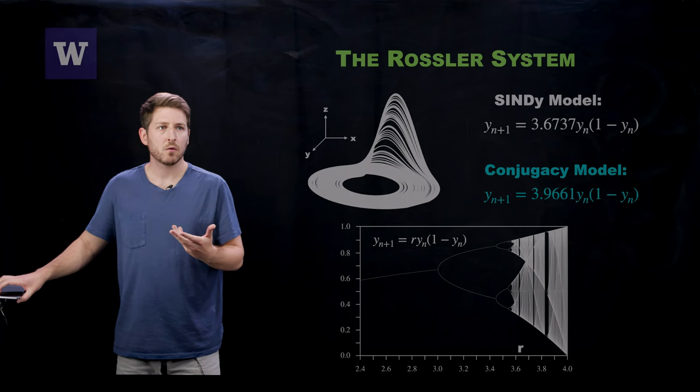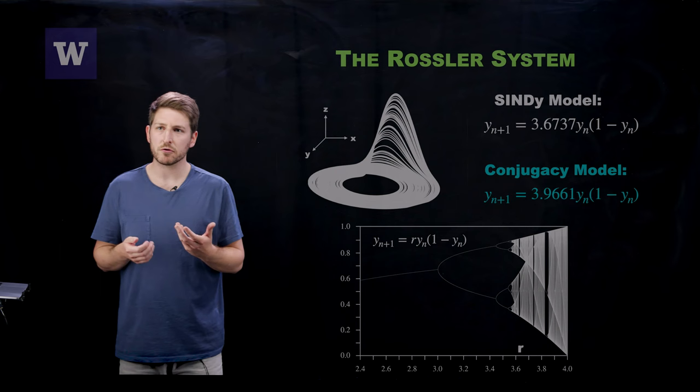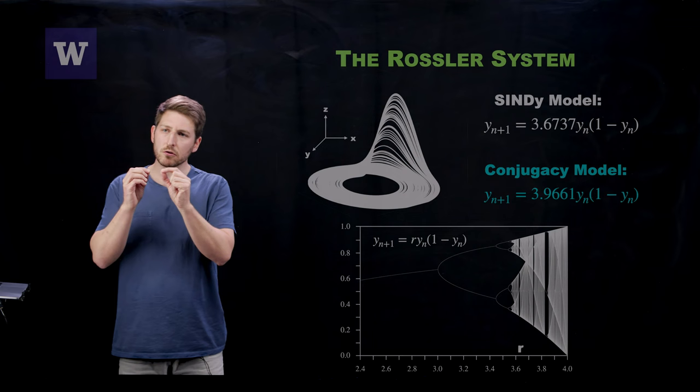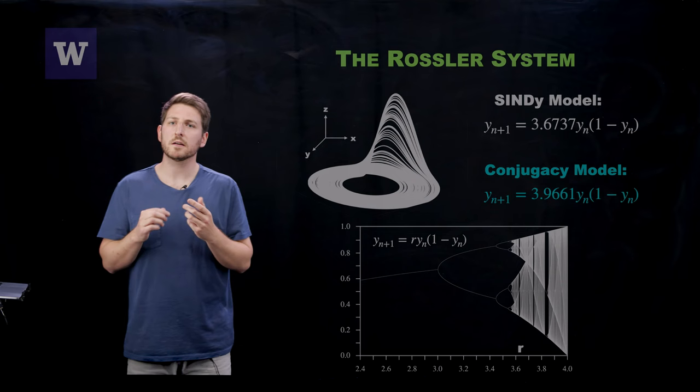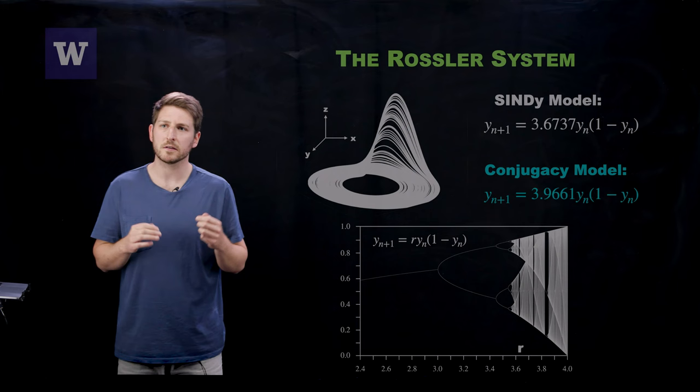And so the question is, which one is better? Well, the first thing that we can do is we can turn to some old results about these quadratic functions, these logistic functions. And what we know is that as you increase that leading parameter here denoted by R, that logistic function undergoes a sequence of period doubling bifurcations eventually resulting in chaos.